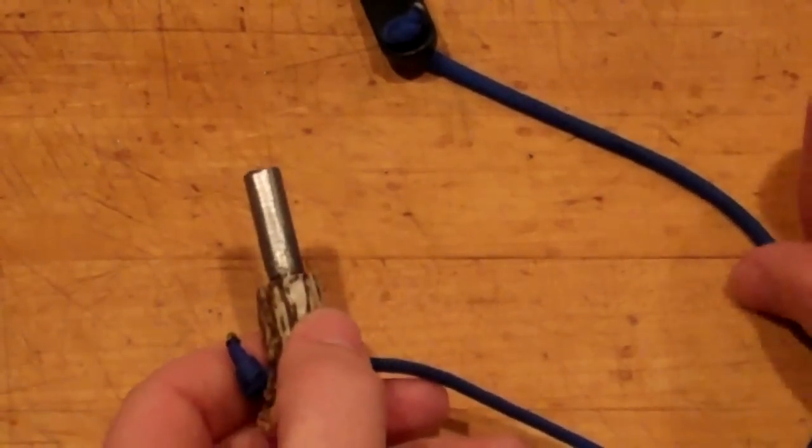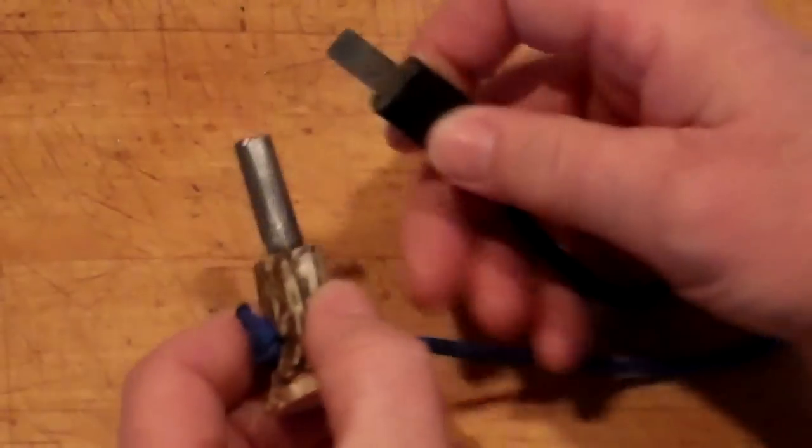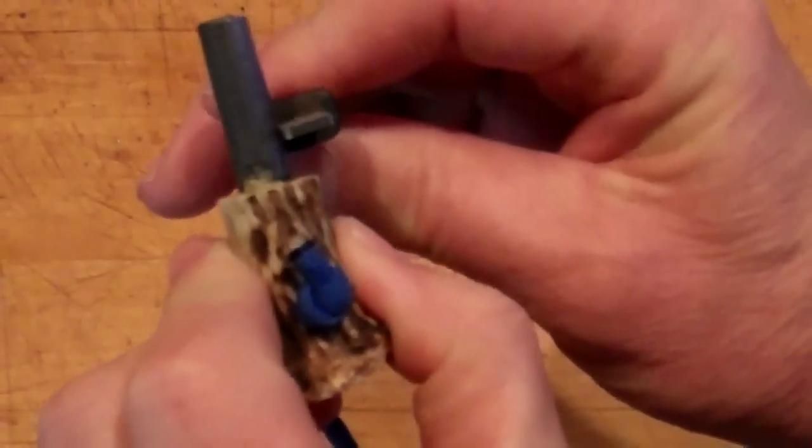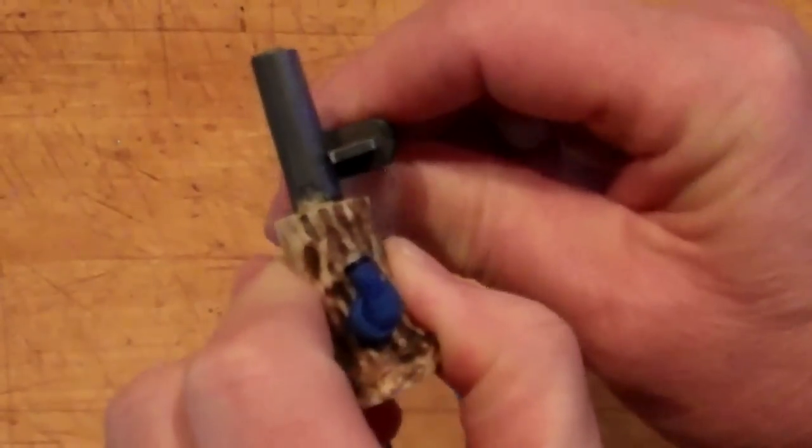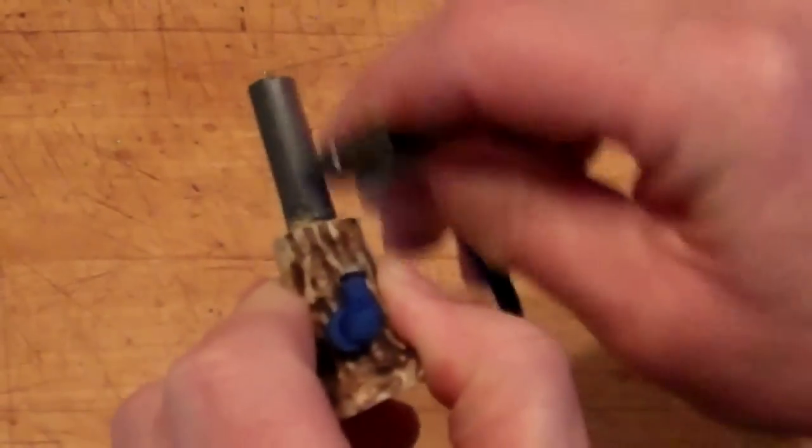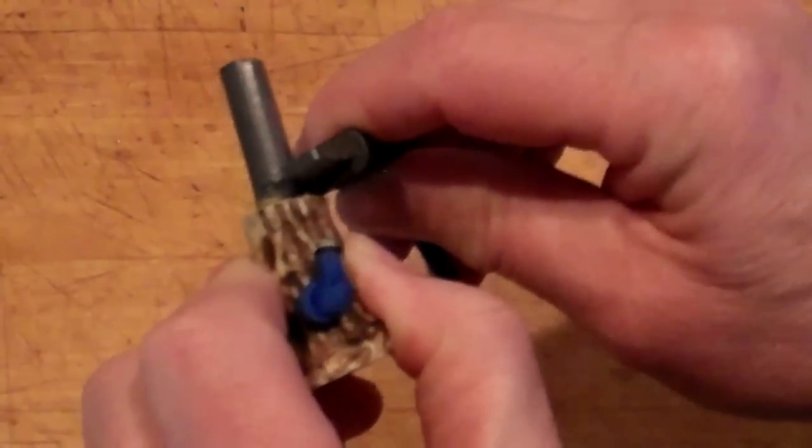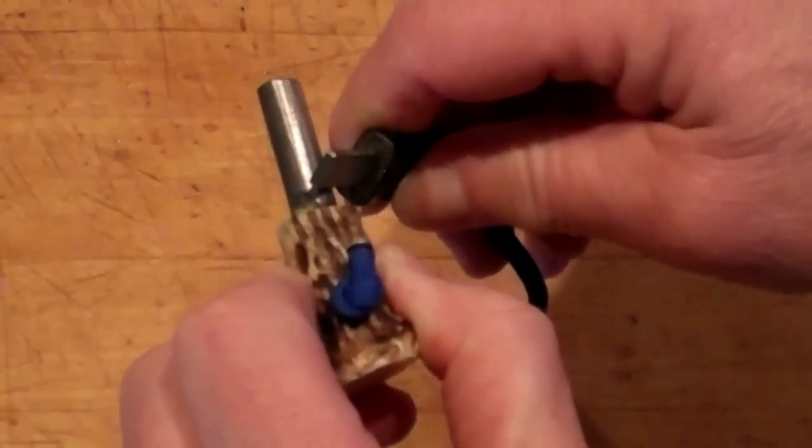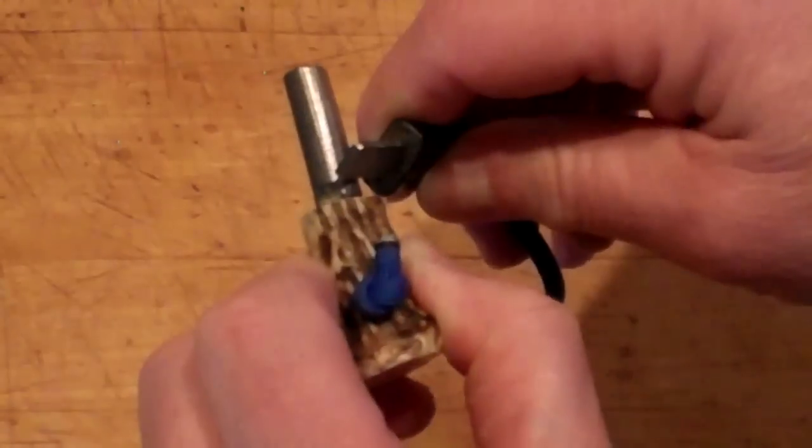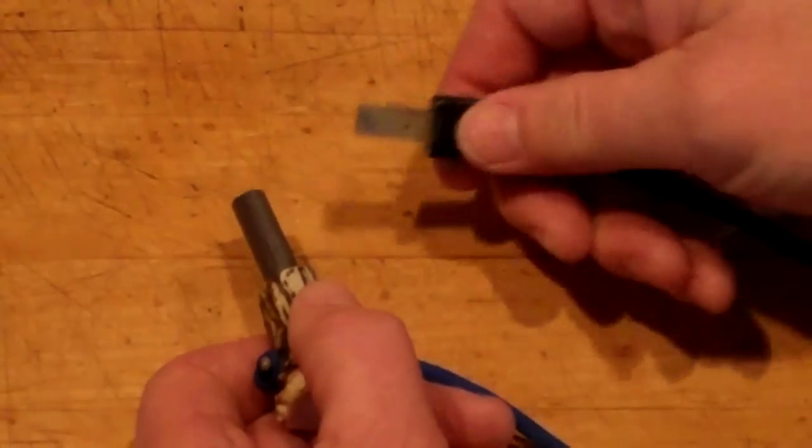If you're right-handed, I would hold the ferrocerium rod in your left hand and the striker in your right. Now take a look here. If you see that, you can see that there's no tilt here. I'm just rubbing it like that. It's not going to work. You're going to have to put about a 45 degree angle on that so you can scrape it.